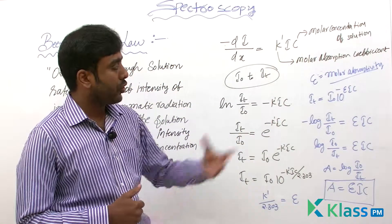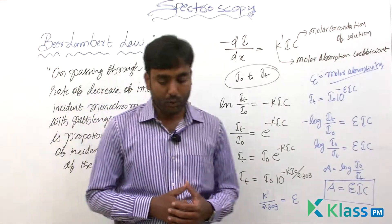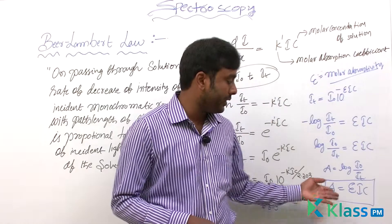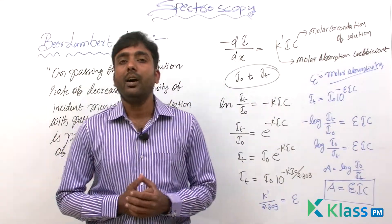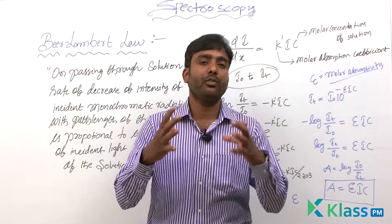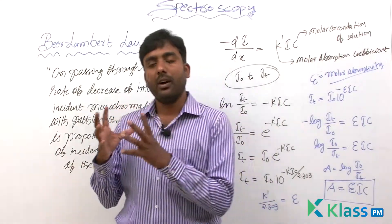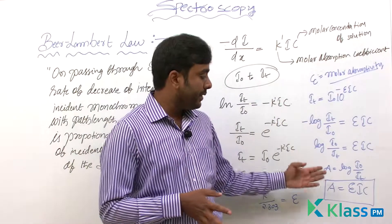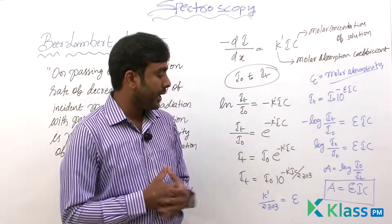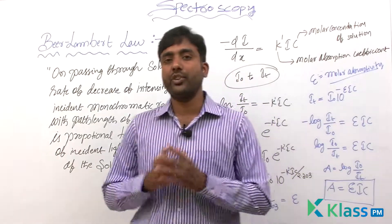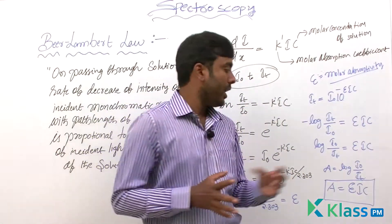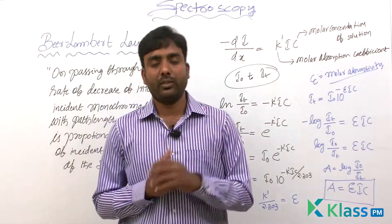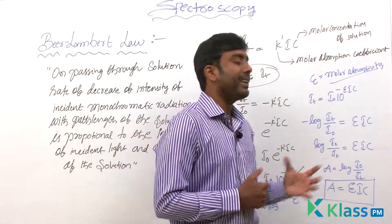For molar extinction coefficient, you can use units of liter per mole per centimeter. But for absorbance A, there are no units since it is a ratio. This A indicates the amount of absorbance taking place for a particular absorbing medium at a particular wavelength. It is an intrinsic property and mostly depends on the concentration and the path length.